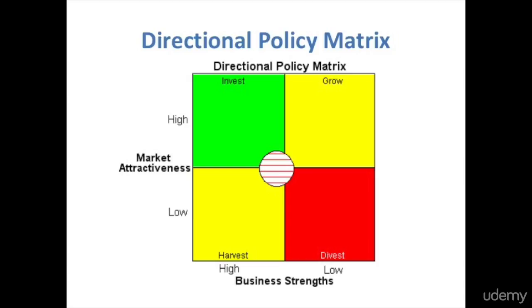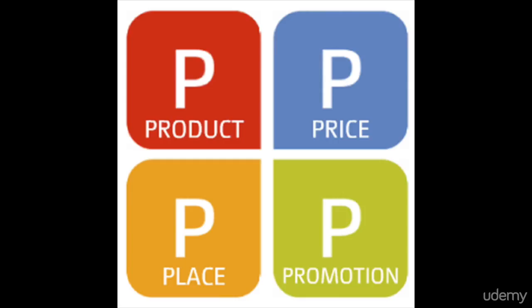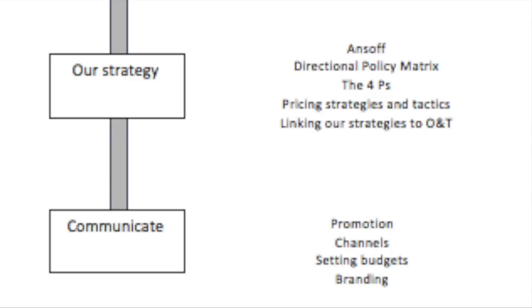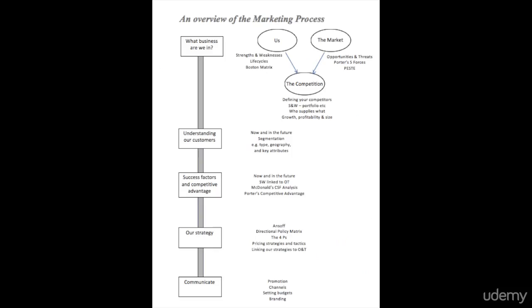We'll be looking at the famous marketing model called the four P's — product, price, place, and promotion — and particularly pricing strategies in detail. Then we'll sum up the strategy section by looking at whether our strategies really address the opportunities and threats identified earlier. Finally, we'll look at the communication box, which is really promotion: what are the options for different channels for promotion, and how do you decide how much money to spend on it? So that's an overview of the course — let's get started.